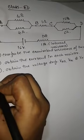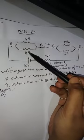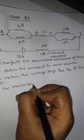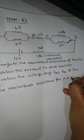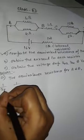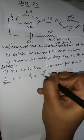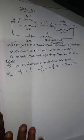First, calculate the equivalent resistance. By seeing this we can easily conclude that the first two resistors — that is 4 ohm and 4 ohm — are in parallel combination. So 1 by R equivalent equals 1 by 4 plus 1 by 4, that will be 2 by 4. Therefore R equivalent will be 2 ohm.